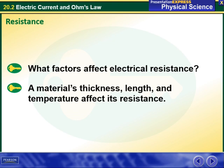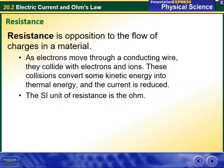We're going to start talking about resistance. What factors affect electrical resistance? A material's thickness, length, and temperature affect its resistance. Resistance is opposition to the flow of charges in a material. As electrons move through a conducting wire, they collide with electrons and ions. These collisions convert some kinetic energy into thermal energy and the current is reduced. The SI unit of resistance is Ohm.